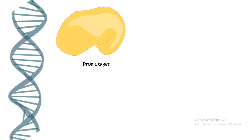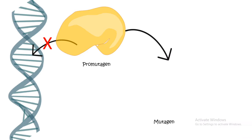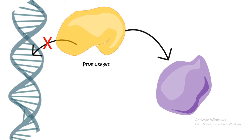However, the disadvantage is that it cannot be used to test chemicals that could be pro-mutagens. A pro-mutagen is a substance which does not directly act on the DNA to cause mutation, but gets converted to a mutagenic form inside the body. Because that conversion happens inside the body, this technique cannot determine the effect of a pro-mutagen. Other than that, this technique is very useful to determine the mutagenic capacity of a chemical.